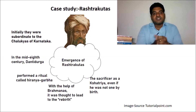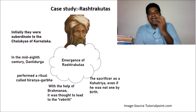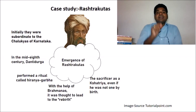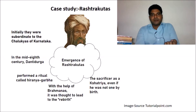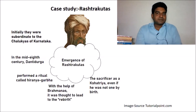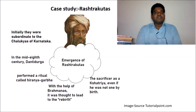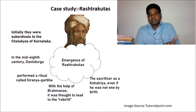Danti Durga was considered a non-Kshatriya. In order to declare his independence and establish himself as a ruler, he performed a ritual called Hiranyagarbha. He could not do this ritual by himself — he had to take the help of Brahmanas, who played a key role during that period.